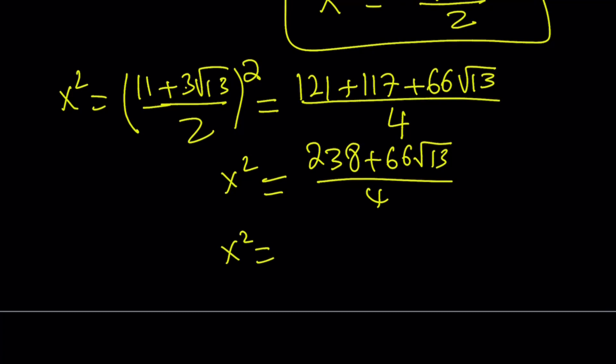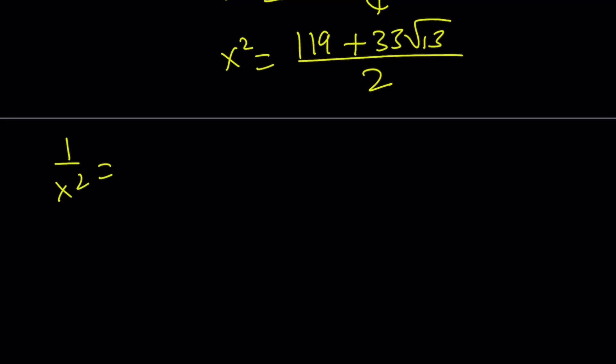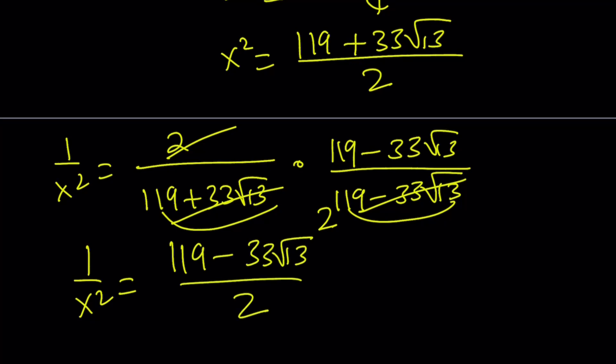So when you add these two numbers up, you're going to get 238 plus 66 root 13 over 4. This is x squared. Let's go ahead and simplify, divide everything by 2. You're going to get 119 plus 33 root 13 divided by 2. Now let me give you 1 over x squared real quick. You just flip the fraction. When you multiply this by the conjugate, you're going to get a 4 at the bottom from difference of 2 squares. To keep a long story short, x squared and 1 over x squared are just conjugates. So this is my 1 over x squared.